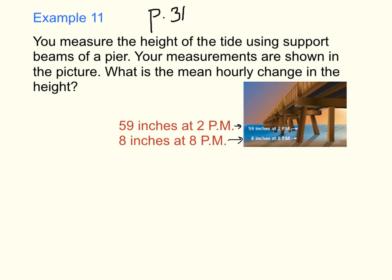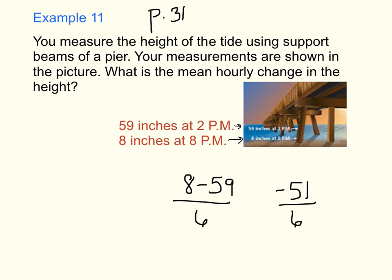At 2 p.m. the tide is at 59 inches, and at 8 p.m. it's at 8 inches. So: 8 minus 59 equals negative 51. The tide drops 51 inches. From 2 p.m. to 8 p.m. is 6 hours. To find the mean hourly change, divide: negative 51 divided by 6. These are different signs, so the answer is negative — the change is negative 8.5 inches per hour.